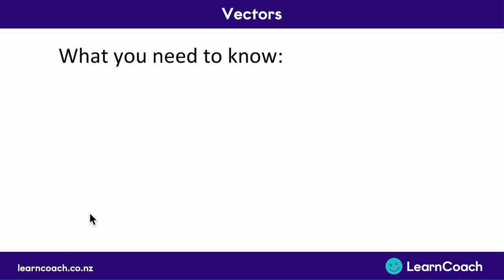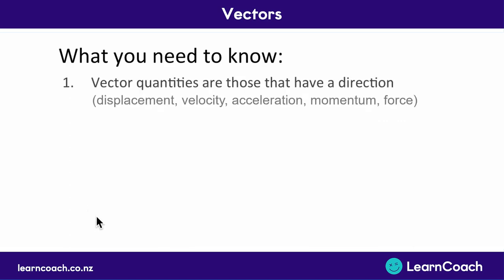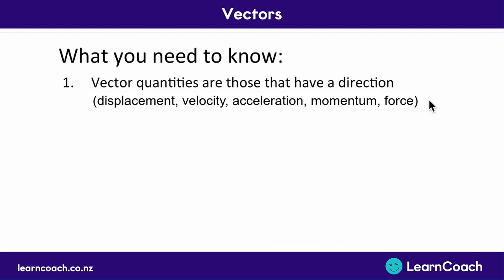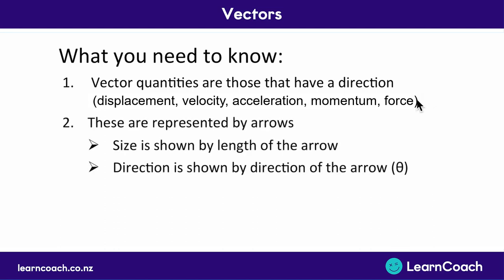Let's summarize what you need to know from this video. The first thing is that vector quantities are those that have a direction. At NCEA Level 2 mechanics, you need to know: distance, velocity, acceleration, momentum, and force. They all have direction and therefore they're vector quantities. These quantities are represented by arrows.